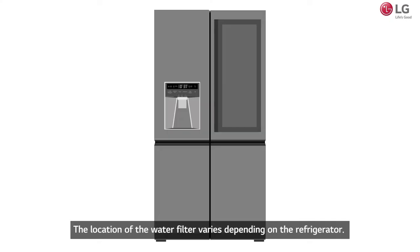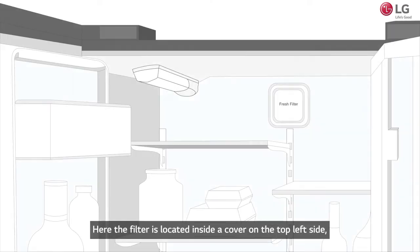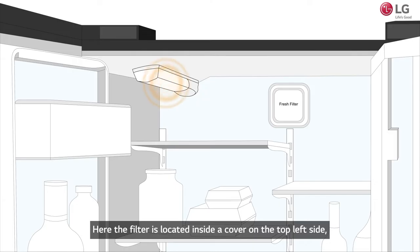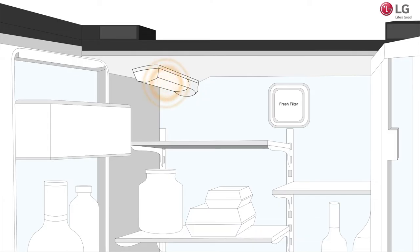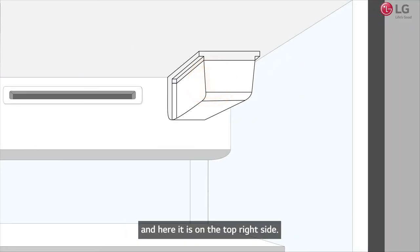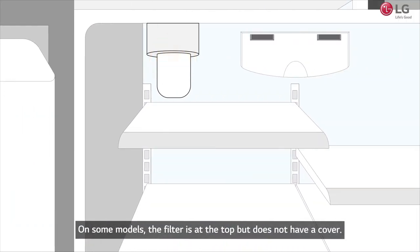The location of the water filter varies depending on the refrigerator. Here the filter is located inside a cover on the top left side, and here it is on the top right side. On some models, the filter is at the top but does not have a cover.